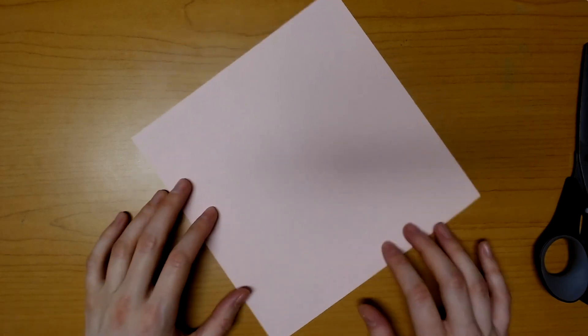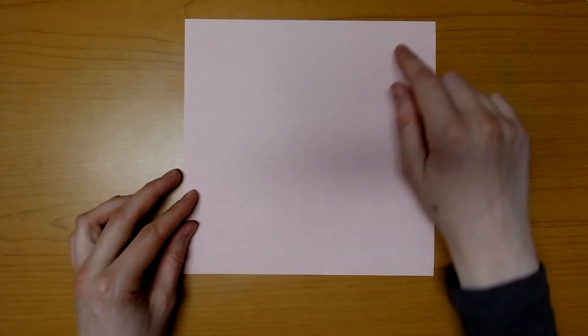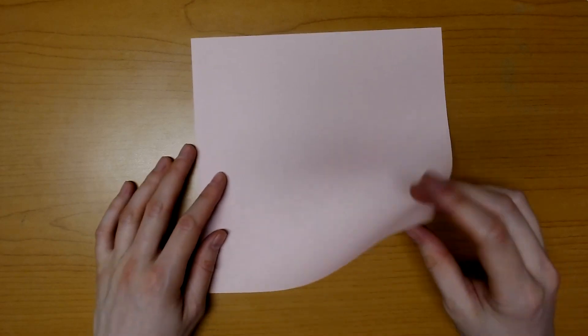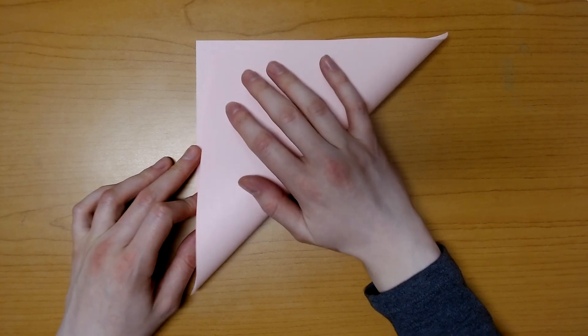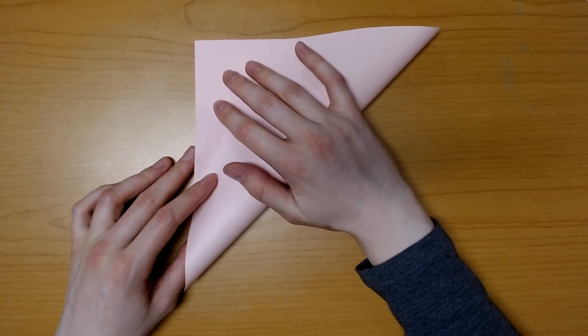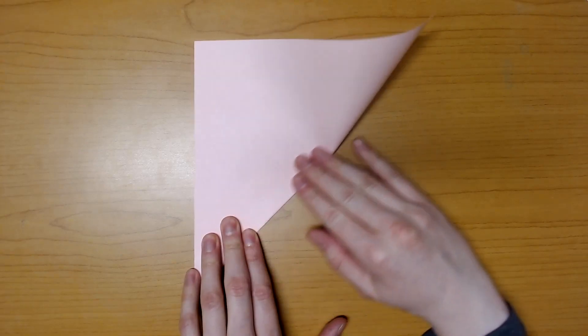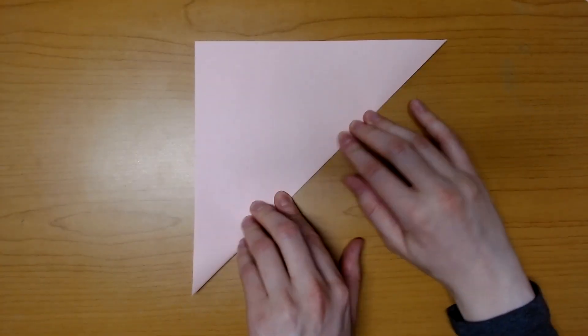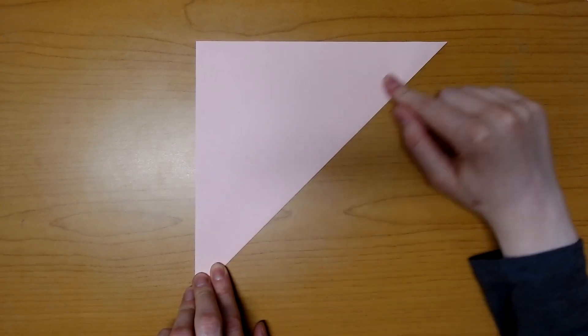Once you have your square, we can start making our bird. To make the bird, it's pretty simple. We're just going to start by folding our sheet of paper in half diagonally, turning our square into a triangle. Try and get these edges to line up as best as you can. They don't need to be perfect, but you do want them as close as possible so that you get a good shape in the end. If you need to, you can adjust it a little bit and then re-crease this edge.